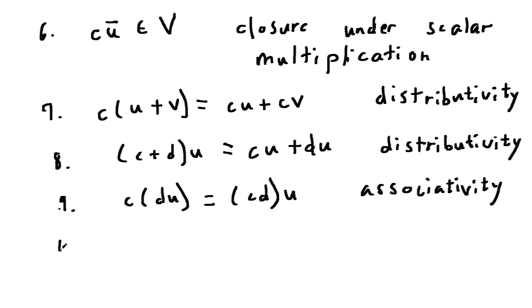And finally the tenth property: if you take the scalar one and multiply by the vector u, you just get back u. That's called the scalar identity.